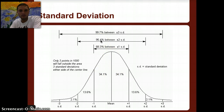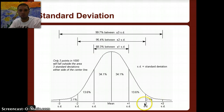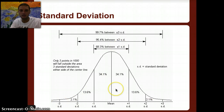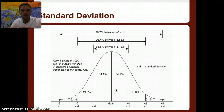As you get farther from the mean and increase the number of standard deviations — plus 2, minus 2, plus 3, minus 3 — you have more and more confidence that the range covers all individuals within the population.